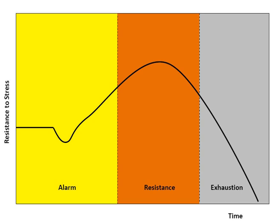The sympathoadrenal medullary axis may activate the fight-or-flight response through the sympathetic nervous system, which dedicates energy to more relevant bodily systems to acute adaptation to stress, while the parasympathetic nervous system returns the body to homeostasis. The HPA axis regulates the release of cortisol, which influences metabolic, psychological, and immunological functions. Through these mechanisms, stress can alter memory functions, reward, immune function, metabolism, and susceptibility to diseases.